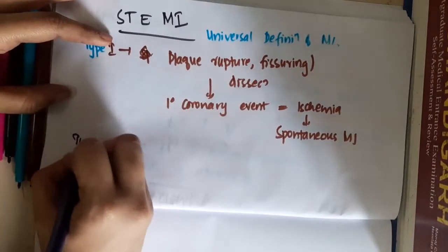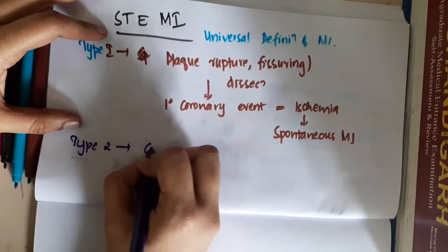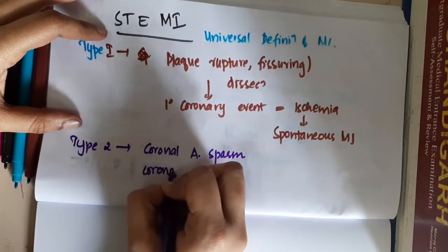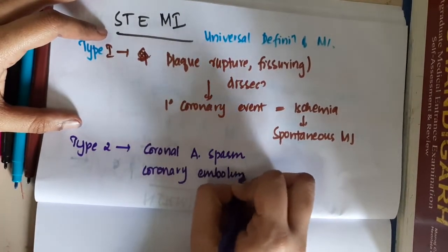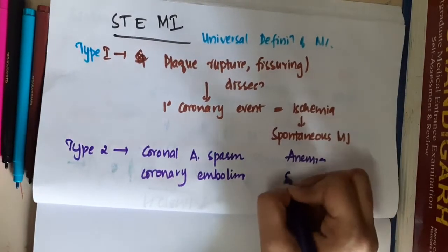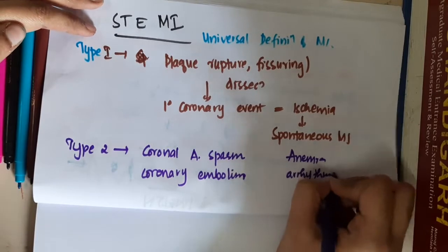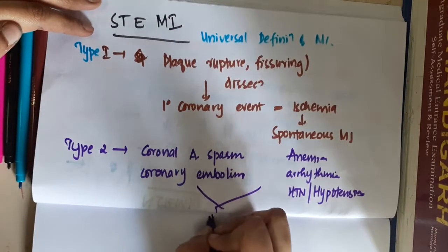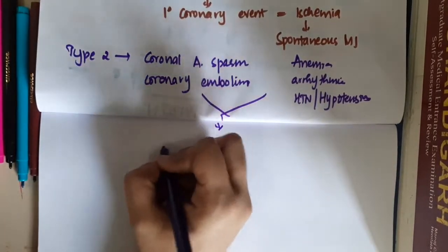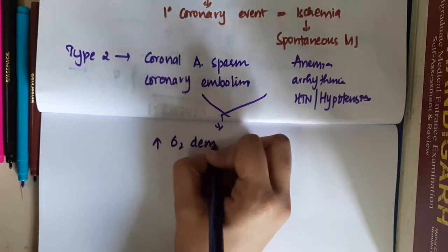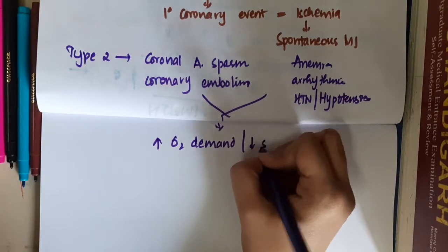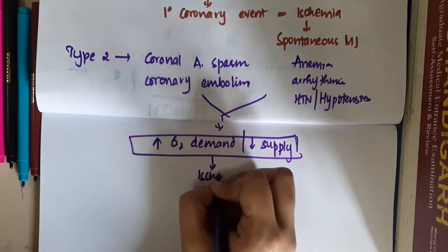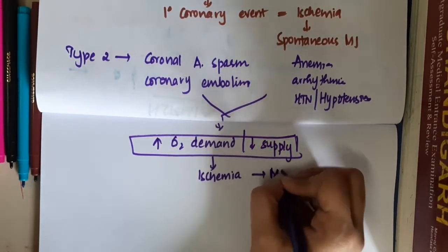In Type 2, there is coronary artery spasm, or it can be due to coronary embolism, or it can be due to anemia, arrhythmias, hypertension, or hypotension. Because of all these causes, there will be either increased oxygen demand or decreased supply. This leads to ischemia, and this ischemia will lead to MI. So this is Type 2.